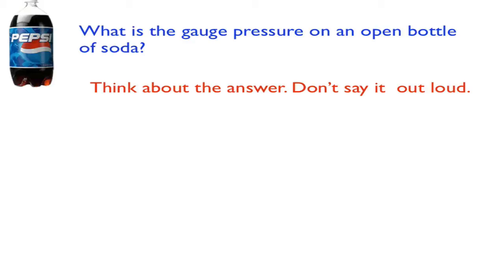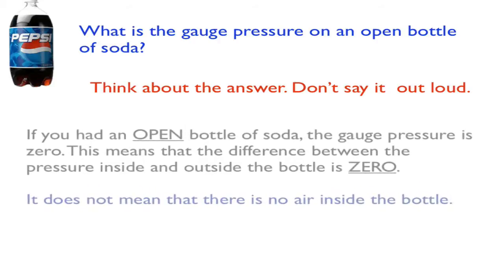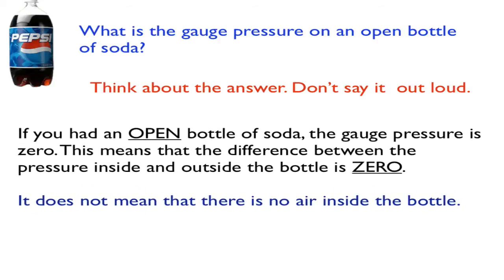Well, if the bottle is open and there's nothing going on, it's just open on the table, then the pressure inside the bottle is the same as the pressure outside the bottle. In other words, it's one atmosphere of pressure. So the gauge pressure is zero.